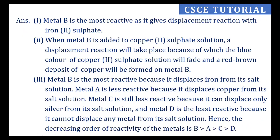Hence, the decreasing order of reactivity of the metals is: B > A > C > D. B is the most reactive, A is less reactive, C is even less reactive, and D is the least reactive.